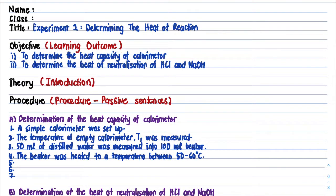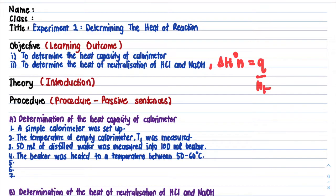For this experiment, the learning outcome is to determine the heat capacity of the calorimeter, capital C, and then to determine the heat of neutralization of HCl and NaOH. This is actually our enthalpy of neutralization. Delta H is actually Q divided by N of H2O.